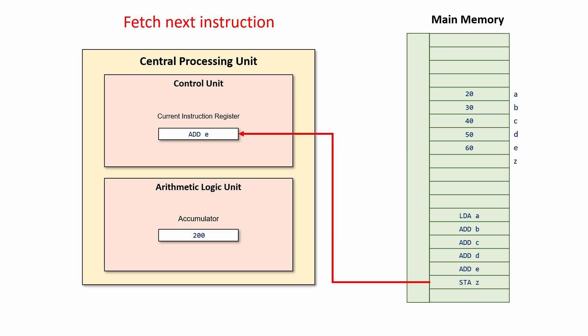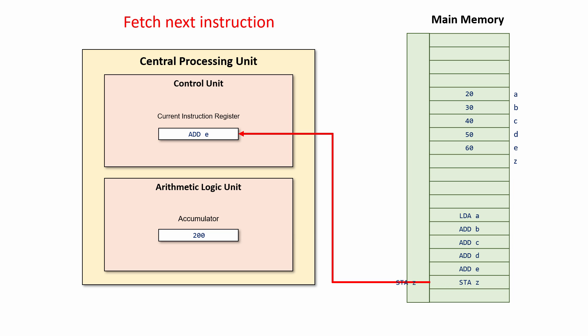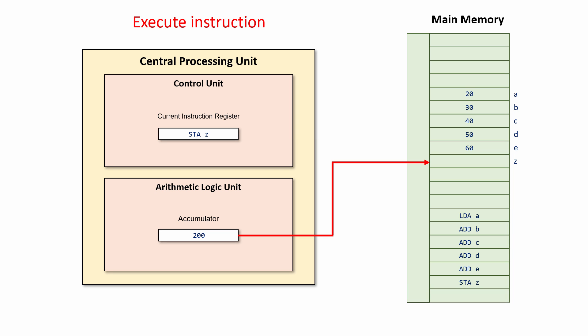The next instruction is fetched. This time we're going to add the contents of memory location E to whatever's in the accumulator. You can see in this example the same actions are being repeated over and over again, which is why we call it the fetch-execute cycle. The final instruction is slightly different — Store Z is an instruction to take whatever's already in the accumulator and store it into memory location Z. So this time something is moving out of the CPU and into the memory.